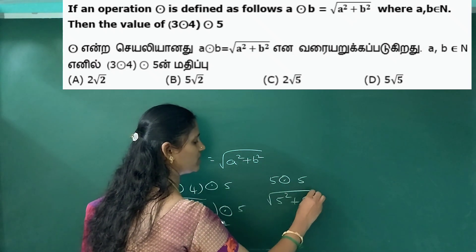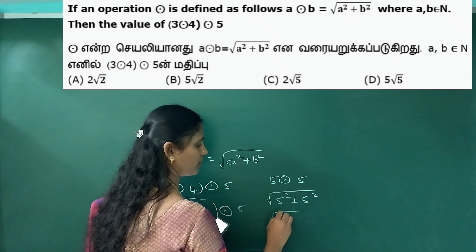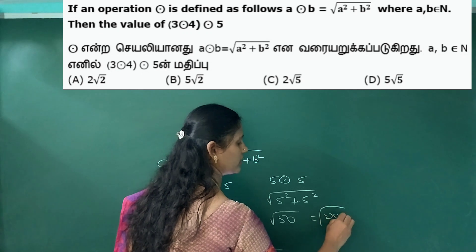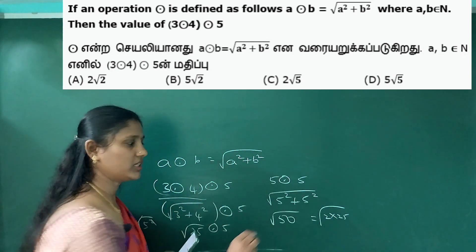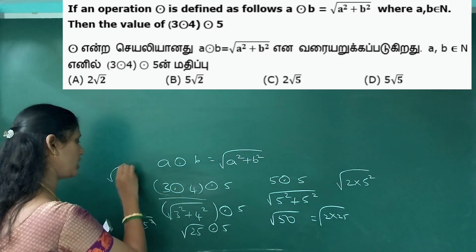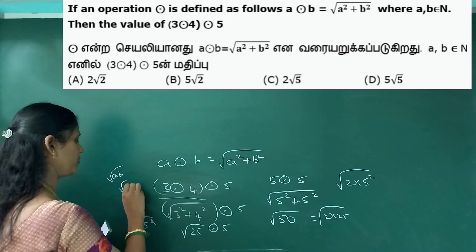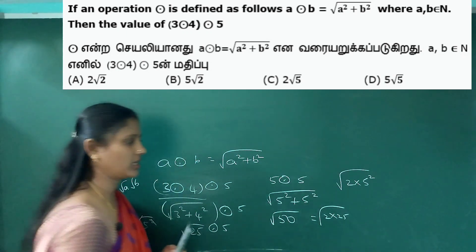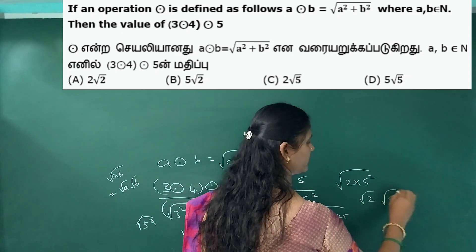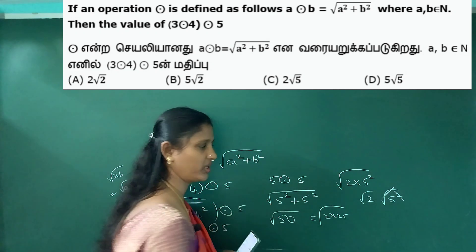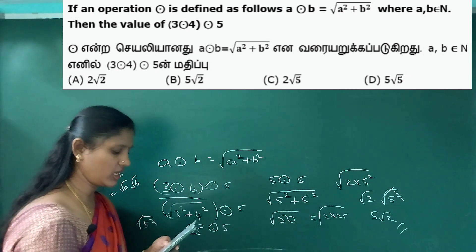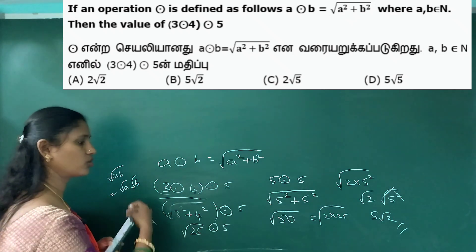Now we apply it again: 5 circle 5. Square root of 25 plus 25 equals square root of 50. We can write this as square root of 2 times 25, which equals 5 root 2. The square and square root cancel, so the answer is 5√2.